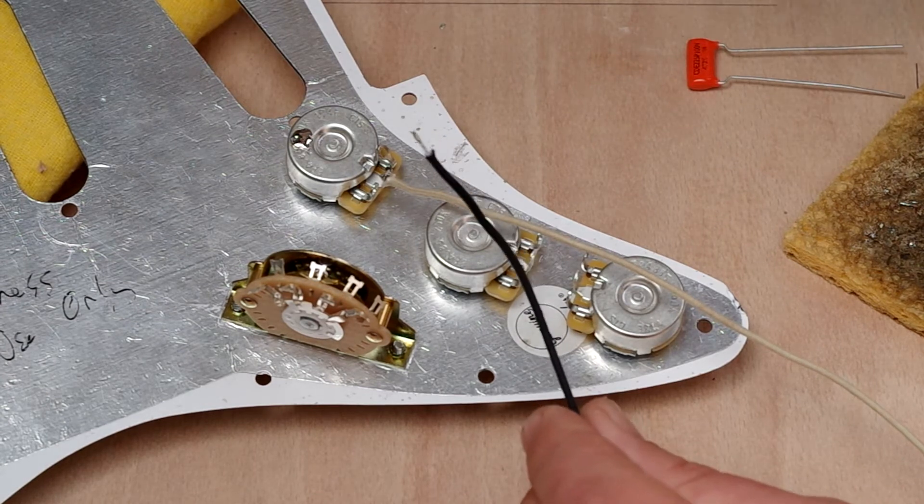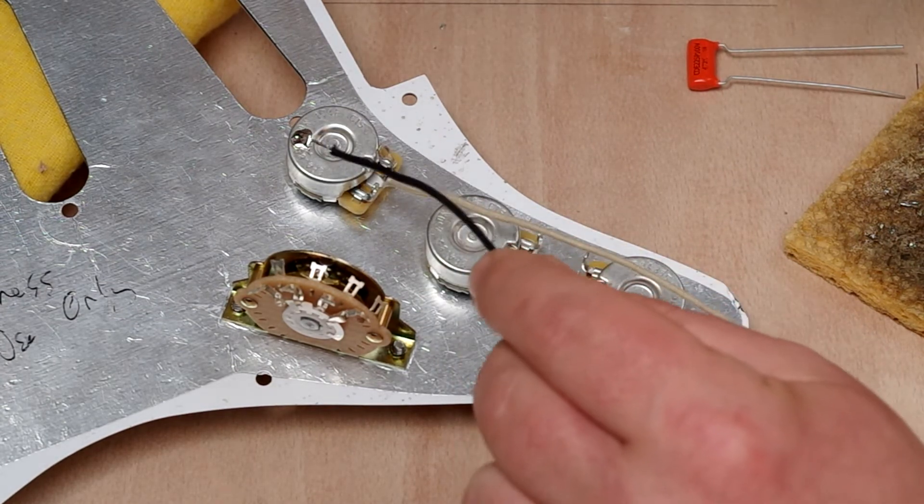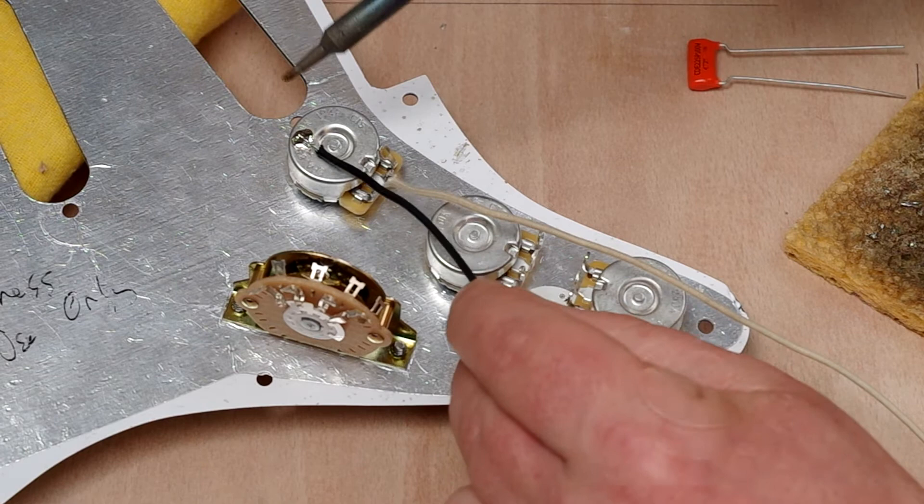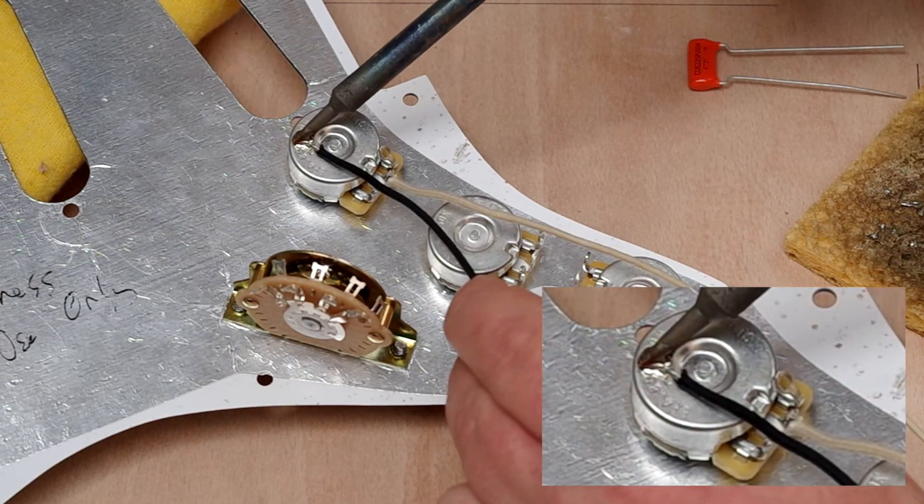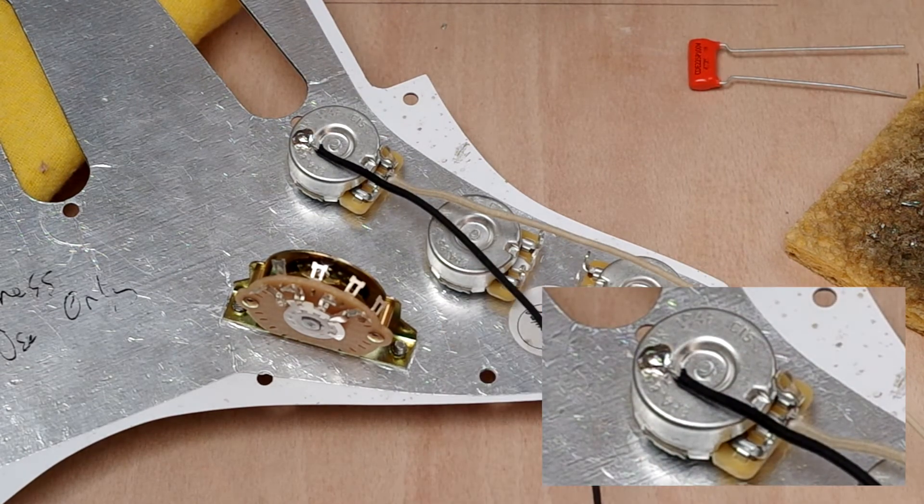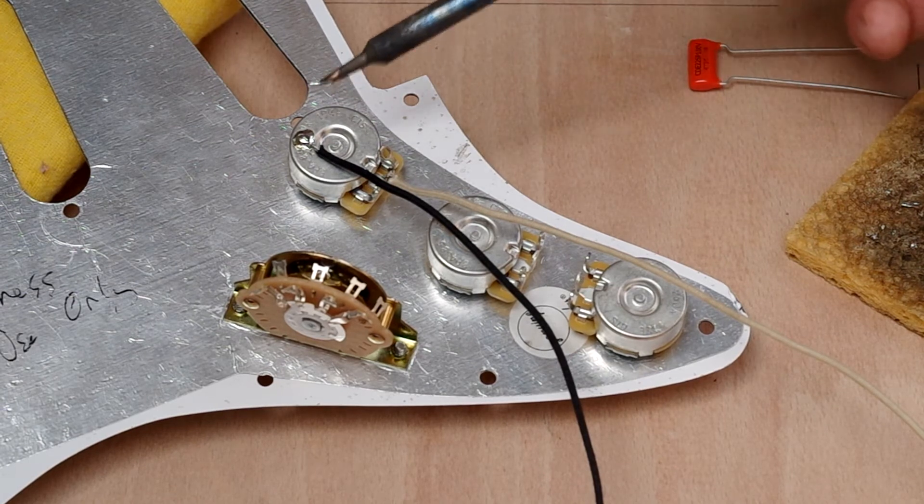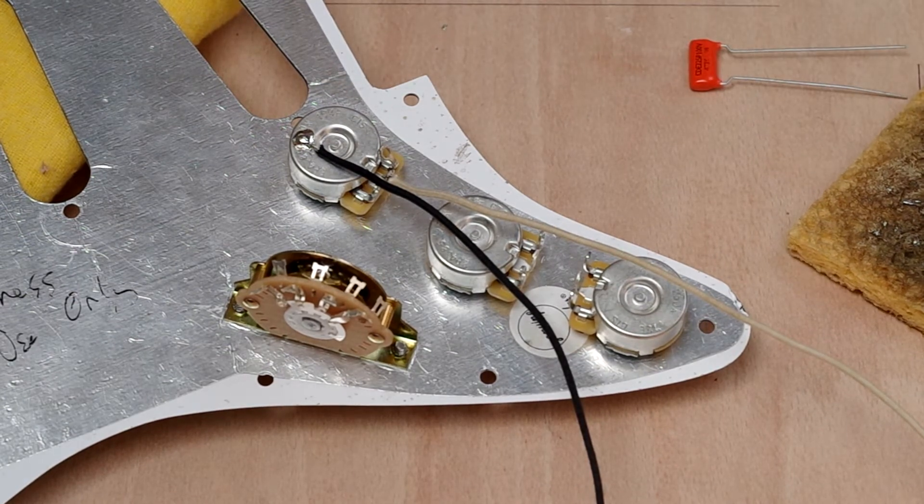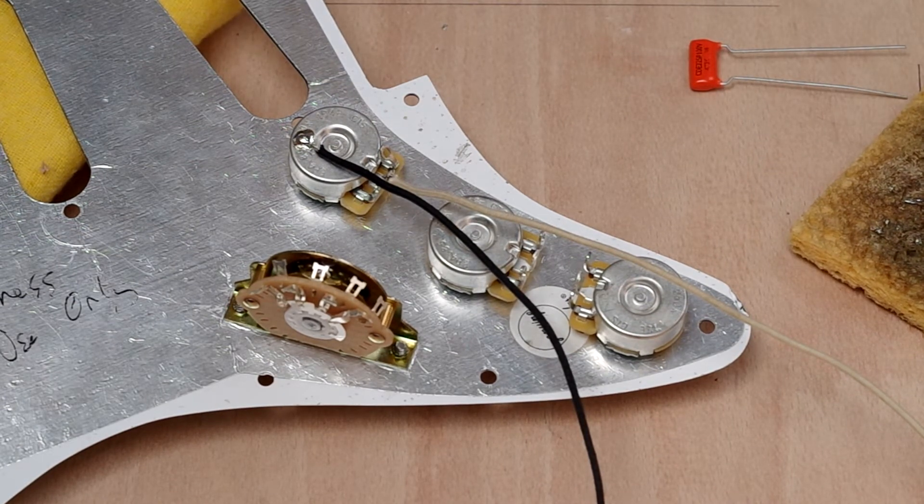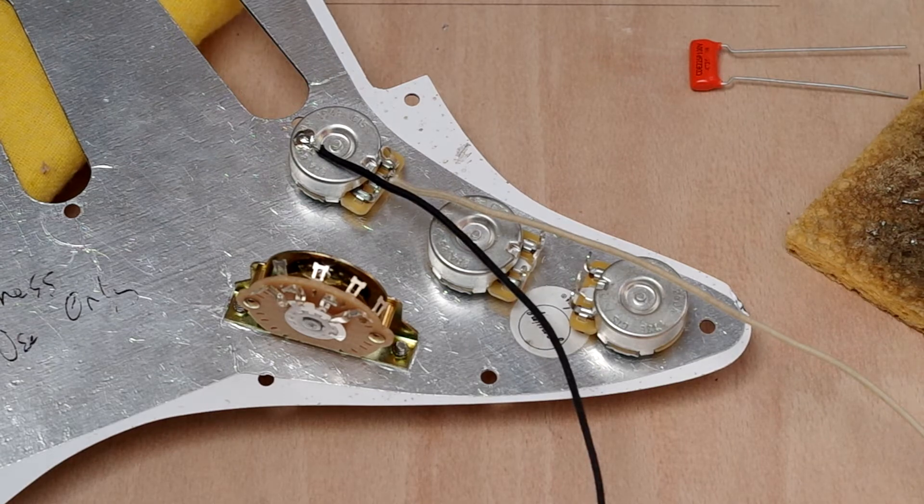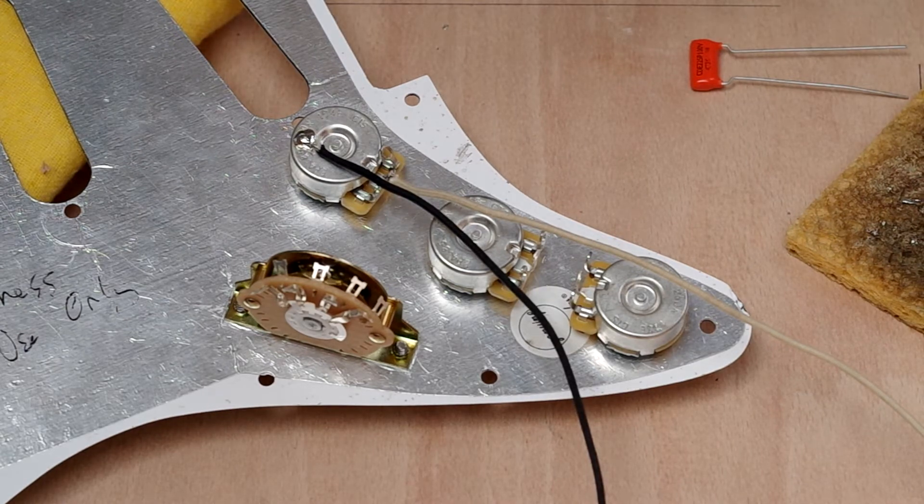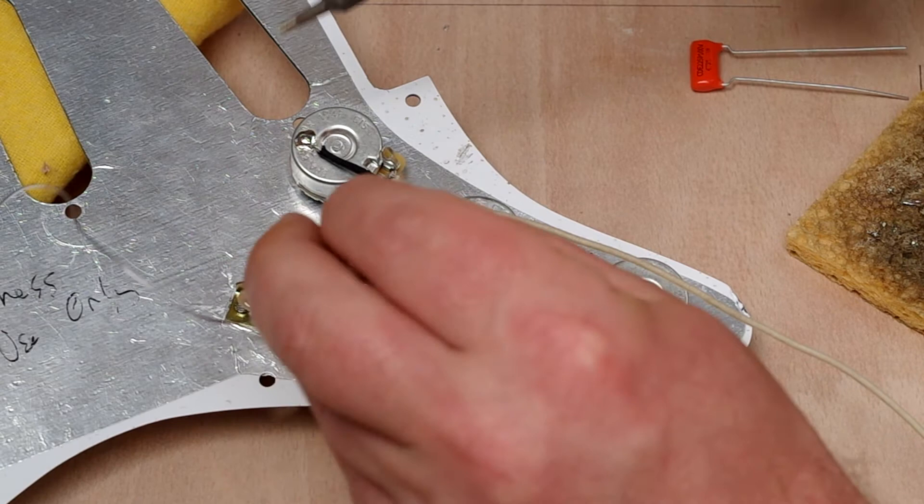I'm going to take the wire that I'm looking to join to there, lay it across there, then melt that there. Now that actually is a good enough joint. But I like a slightly stronger joint than that. And a good successful joint is a really shiny one.